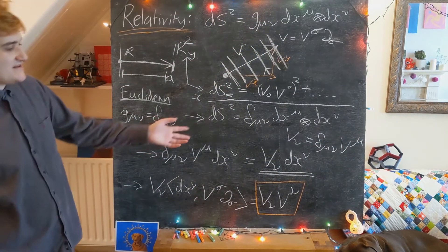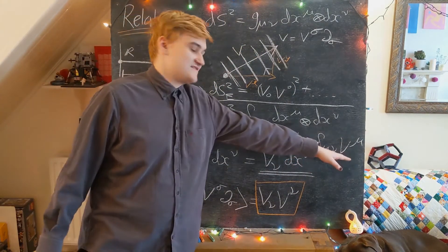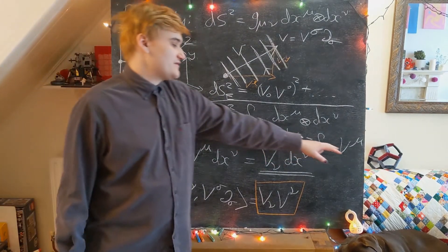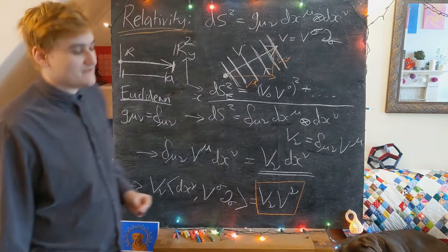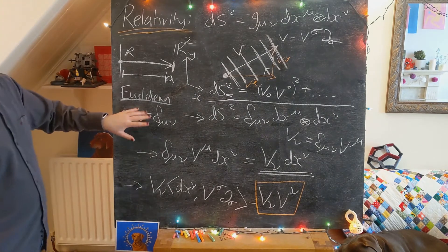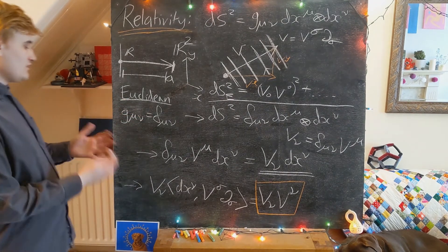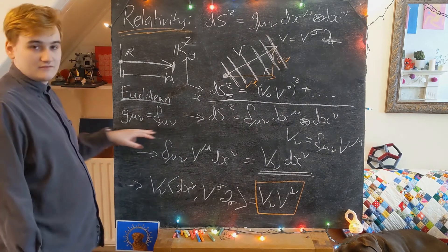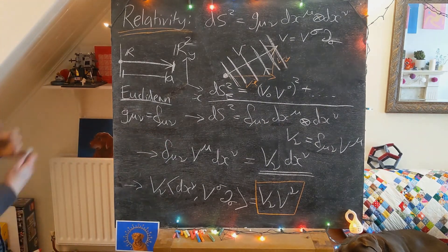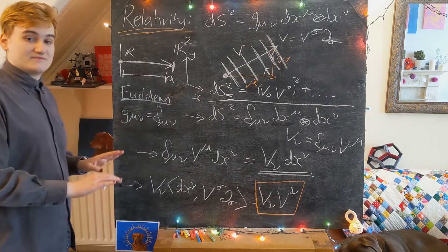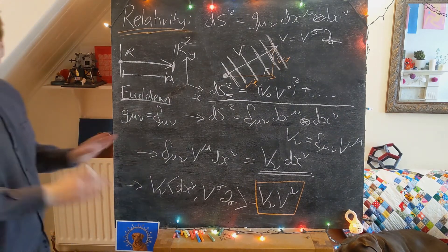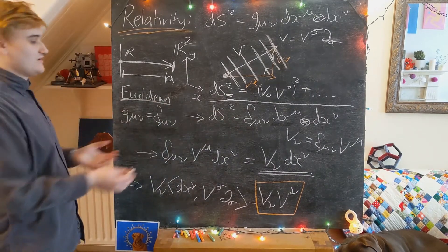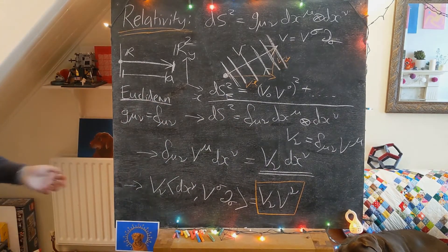So the one-form components are going to be exactly the same as the vector components in this simple case of the Euclidean geometry. But now as this metric becomes more general and not the identity matrix, we're going to see that vectors and one-form components can be drastically different, and doing these calculations is going to become slightly less trivial.